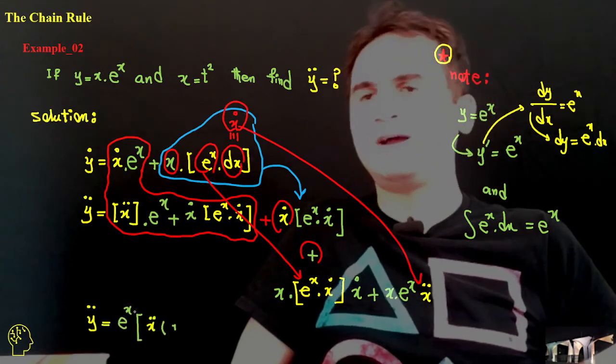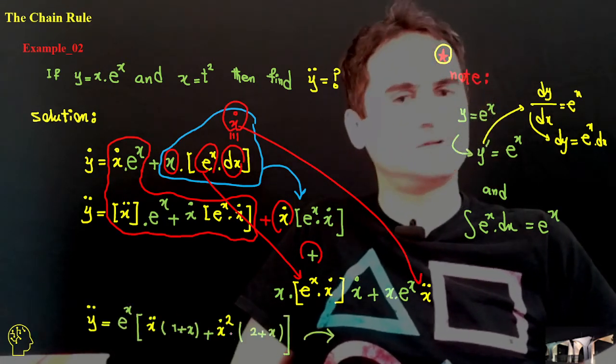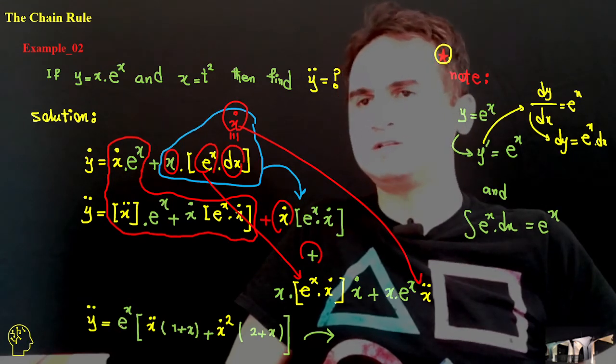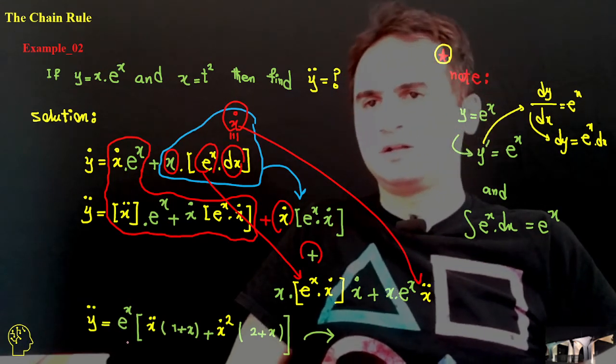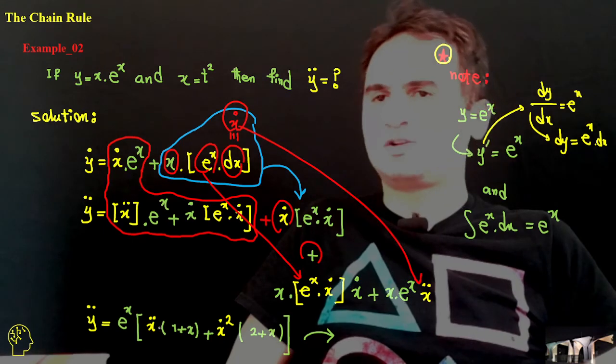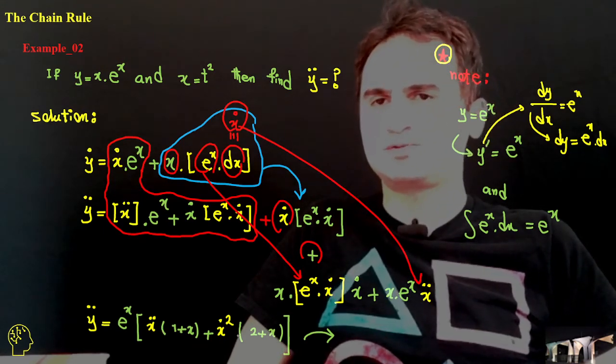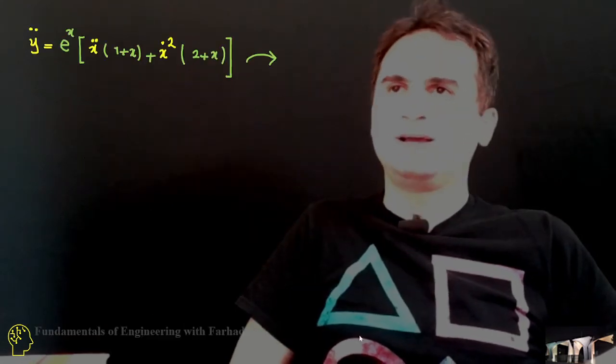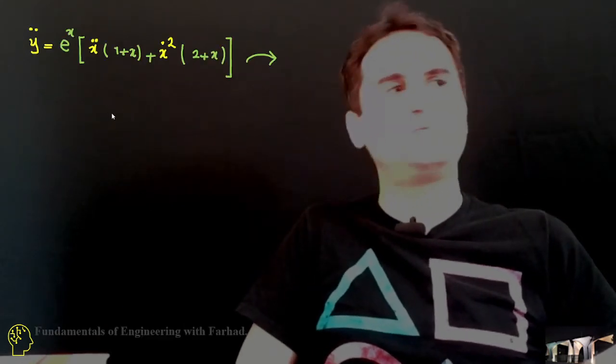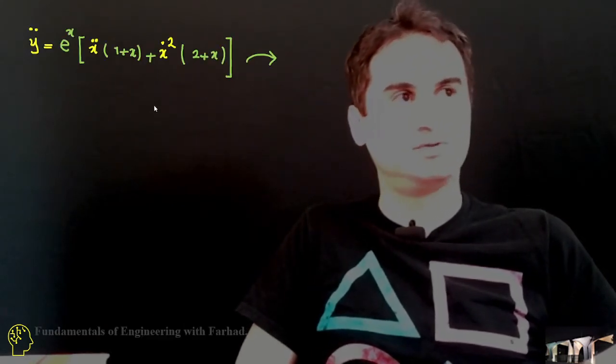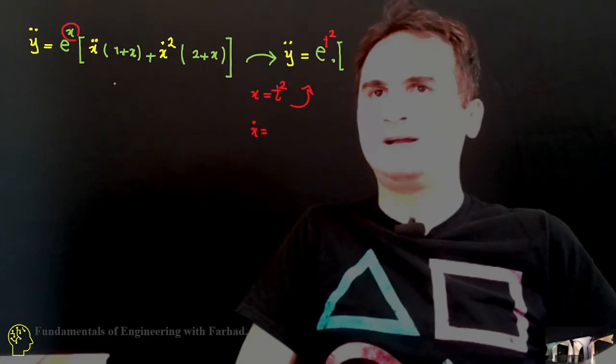If we rearrange our equation and factor out e to the x, we can have it like y dot is equal to e to the x times x dot, x double dot times one plus x plus x dot squared times two plus x, and then replace the numeric value of x is equal to t squared at the last.